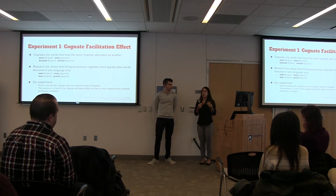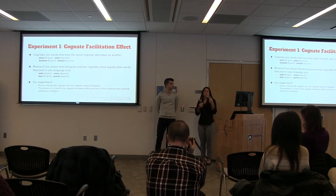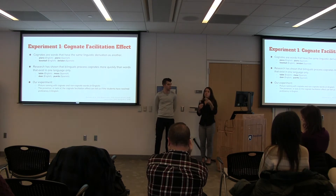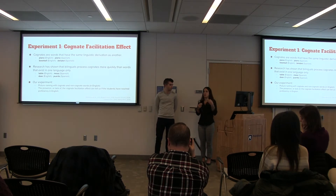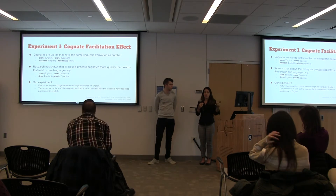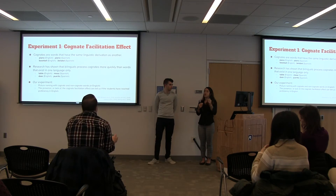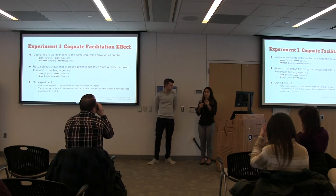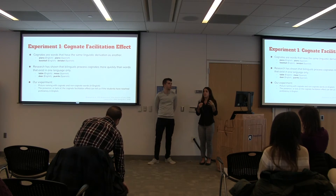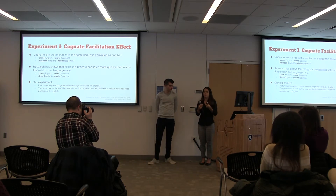Research has shown that bilinguals process cognates faster than non-cognates. For example, words that are non-cognates are 'table,' which in Spanish would be 'mesa,' and 'door,' which would be 'puerta.' They're completely different and take a little longer to process. Our experiment consisted of showing participants some pictures, and all they had to do was identify the pictures in their second language, which is English. We were measuring how much time they took to identify these pictures, and regardless of whether they showed this effect or not, it was still good research to see how proficient our participants were becoming in English.